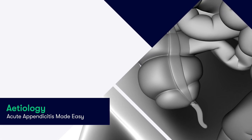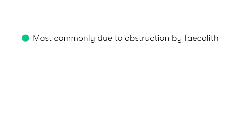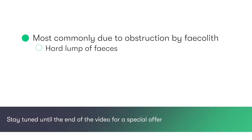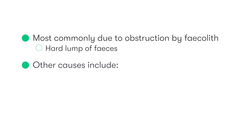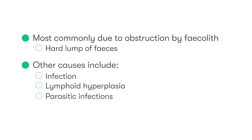The underlying trigger for appendicitis is obstruction of the appendix lumen. The most common cause is faecoliths — hard bits of faeces — becoming lodged in the lumen. Other causes of luminal obstruction include infections, lymphoid hyperplasia, particularly in patients with inflammatory bowel disease, and parasitic infections, which are especially important in developing countries. In older patients, tumours of the cecum which, as they grow, may cause obstruction of the opening of the appendix.